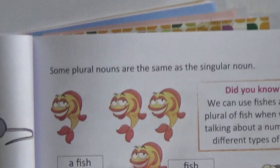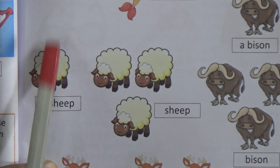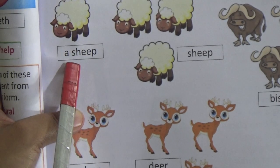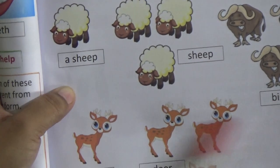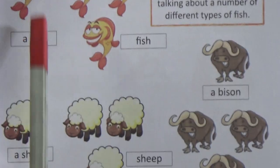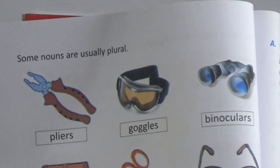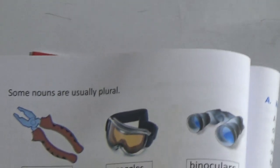Some plural nouns are the same as singular. Fish — in singular it is 'fish,' in plural it is also 'fish.' Ship — singular 'a ship,' plural 'ship.' A bison — plural 'bison.' A dodo — plural 'dodo.' These are plural numbers but their spelling is the same as the singular number. And some nouns are usually plural: pliers, goggles, binoculars, shorts, scissors, glasses, jeans, trousers, sandals — some nouns are usually plural.